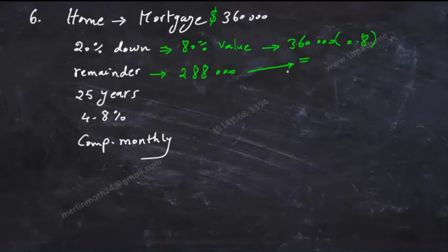$288,000. 25 years is t and r is 0.048 compounded monthly, means m equals 12.